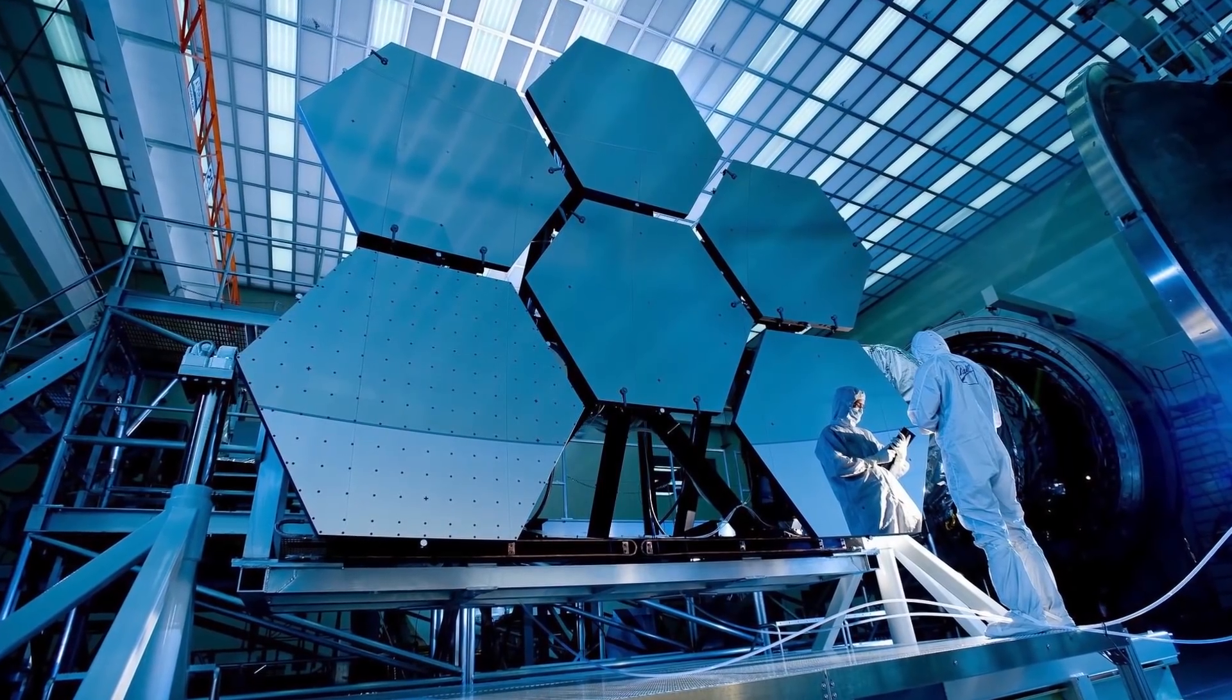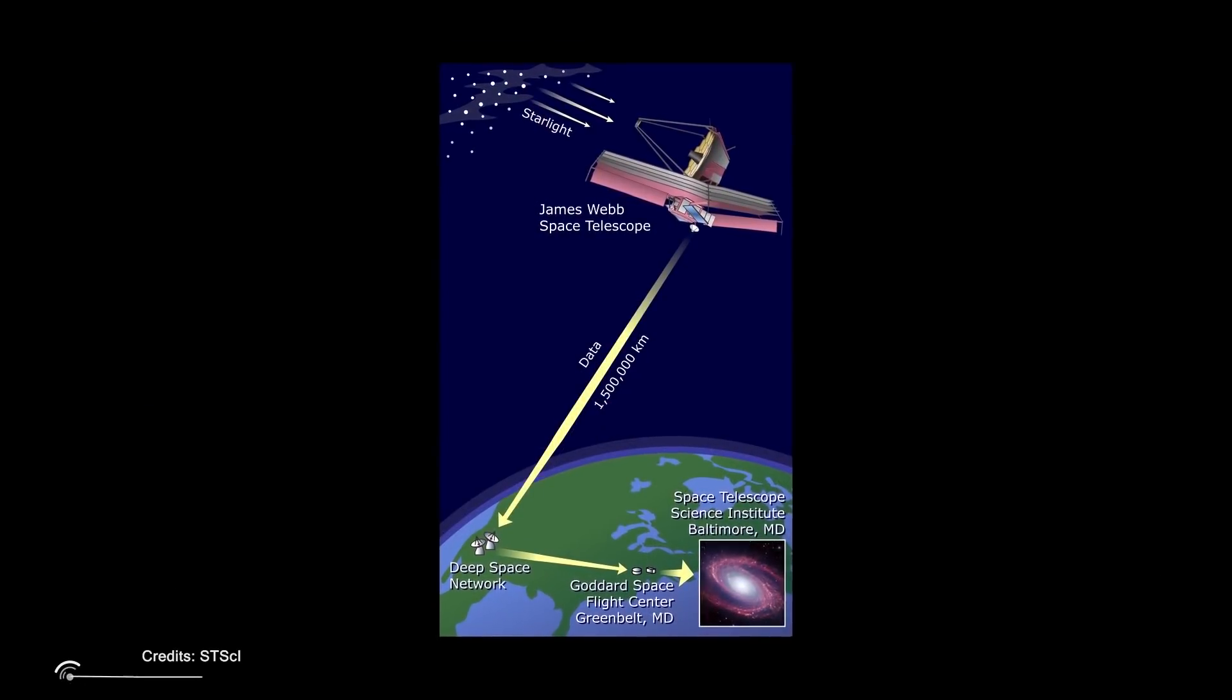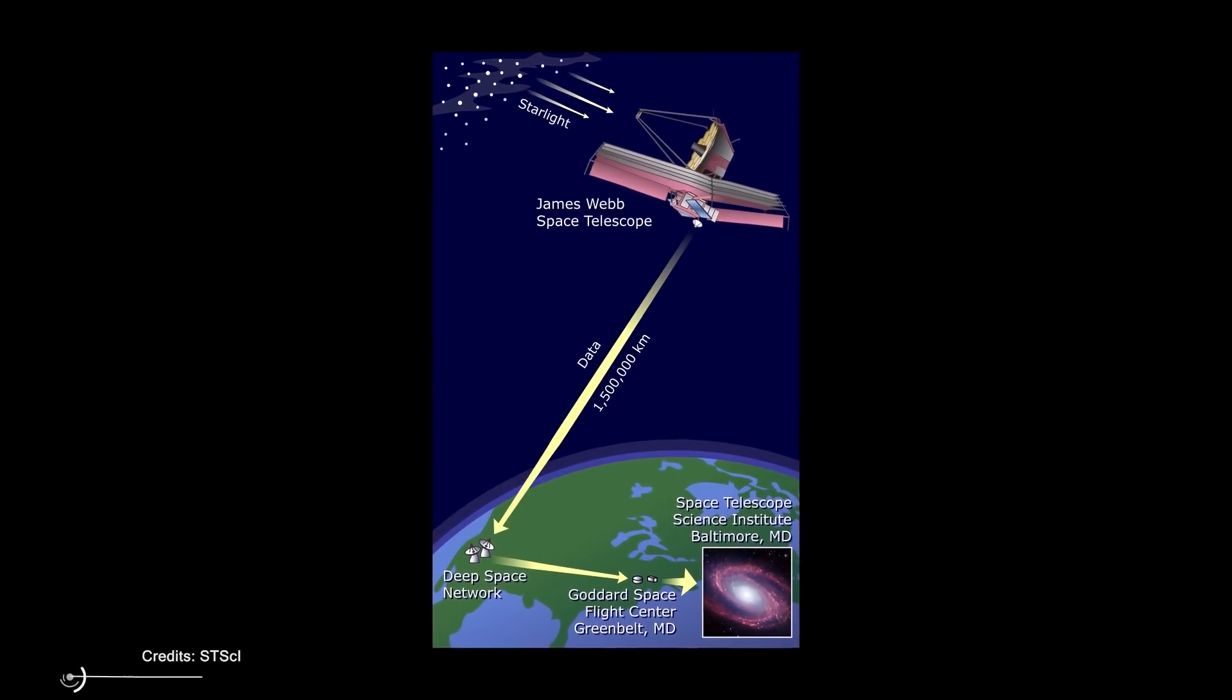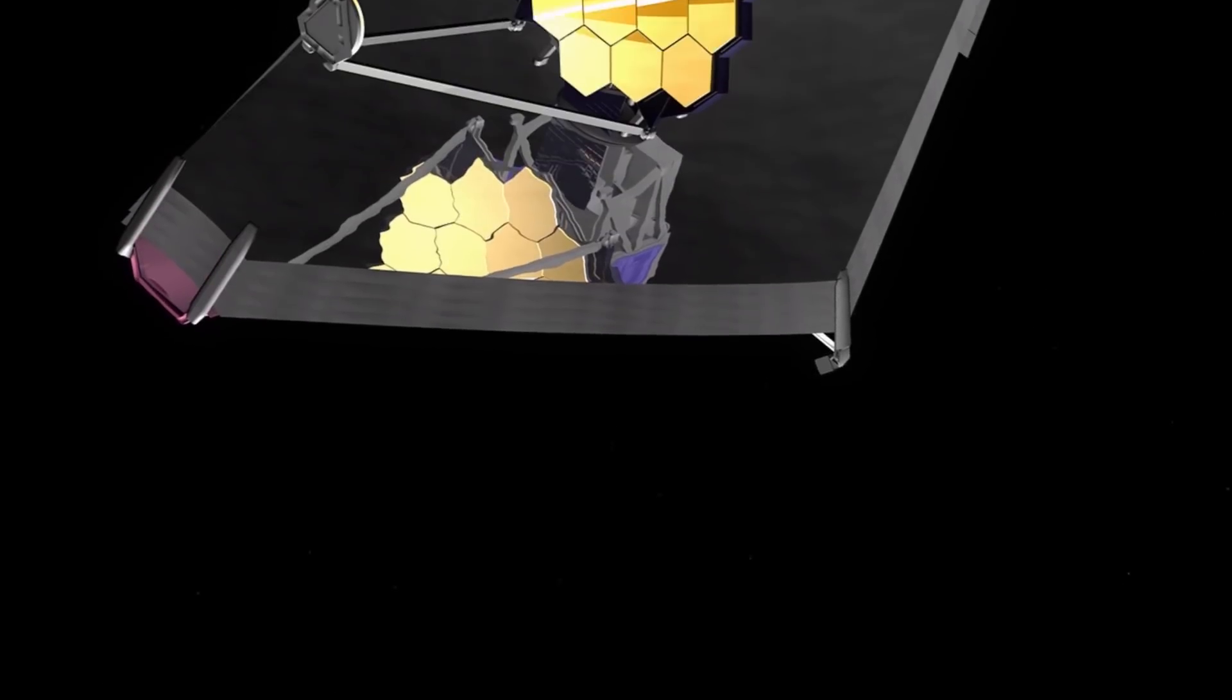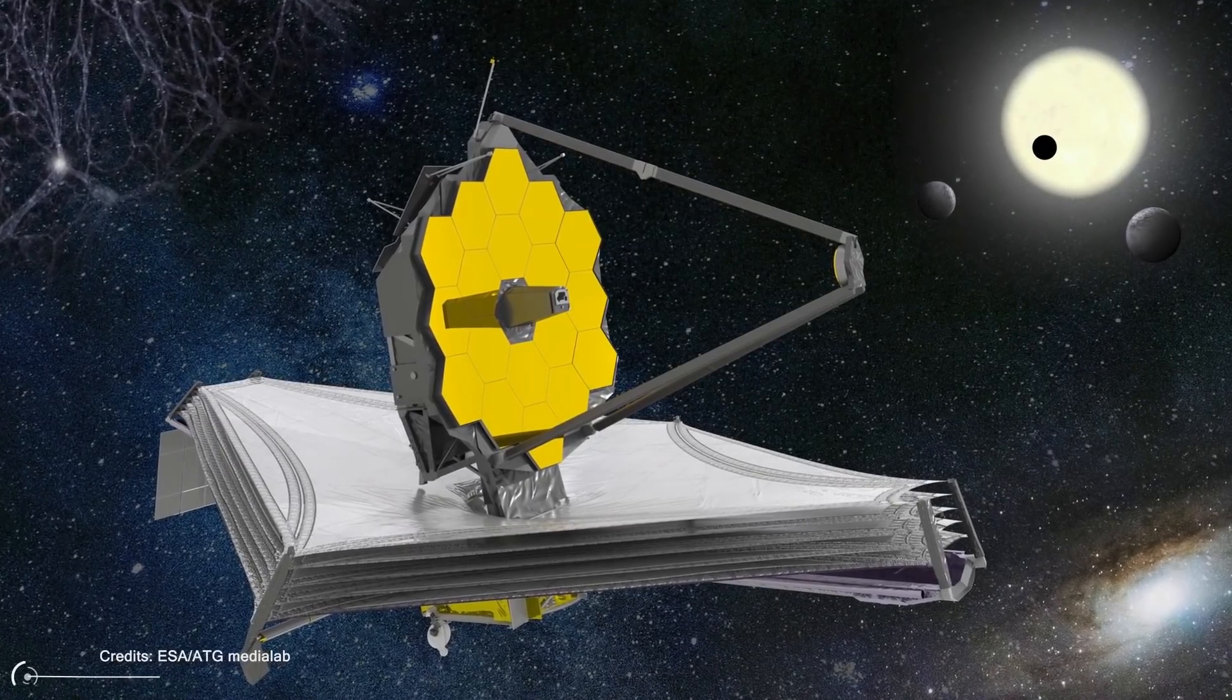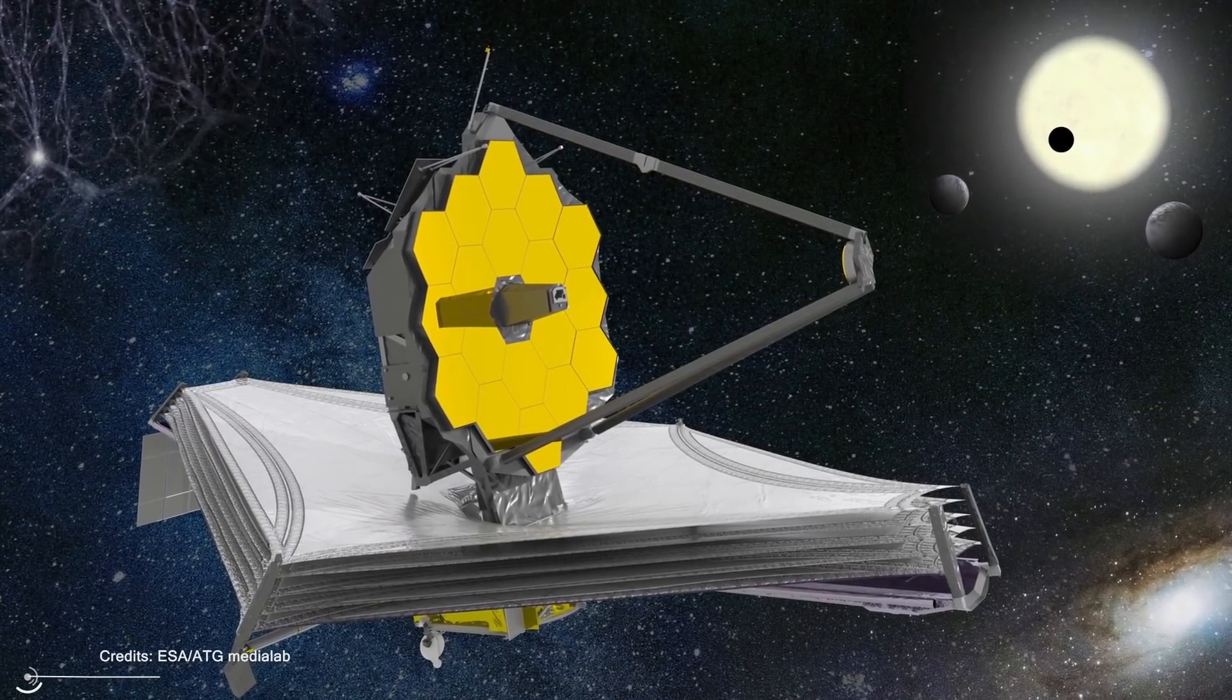It must correctly position the hexagonal lenses that make up the telescope, do temperature measurement tests of all the devices, and perform some tests of sending data back to Earth. Something that few know is that the process of sending the collected data to Earth is one of the tasks that demands the most energy.